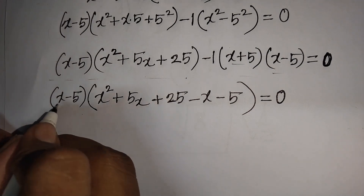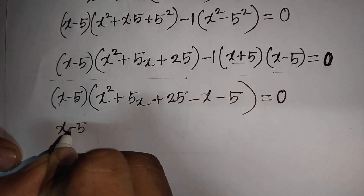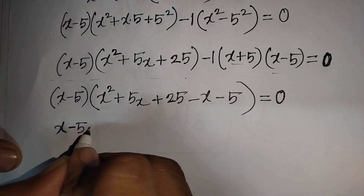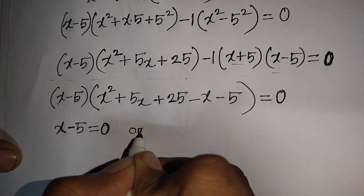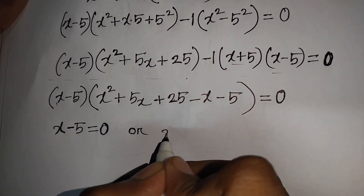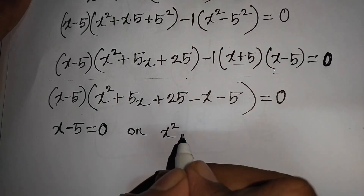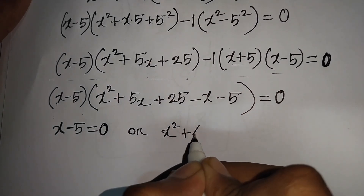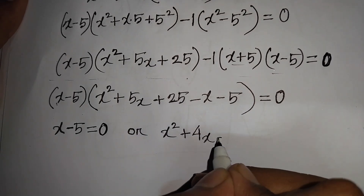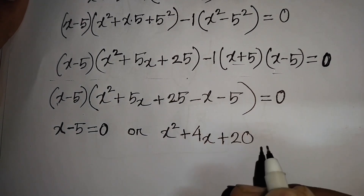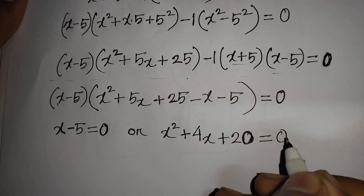Now we can write: x minus 5 equals 0, or x² + 5x minus x, which means plus 4x, then plus 25 minus 5, which means plus 20, equals 0.